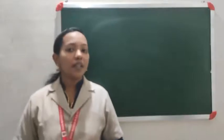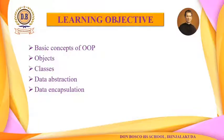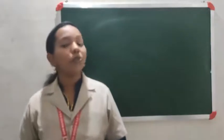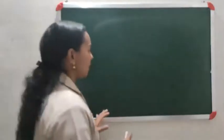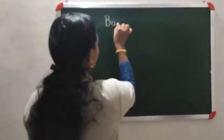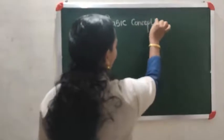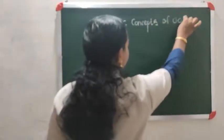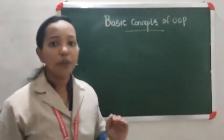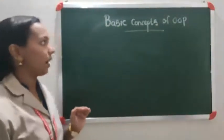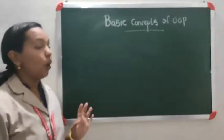In this video, we are going to discuss the four basic concepts of object-oriented programming. We will start with object, then class, data encapsulation, and data abstraction. These are the four basic concepts of OOP — the short form of object-oriented programming — that we will discuss in this video.